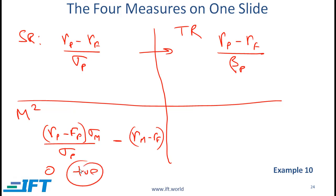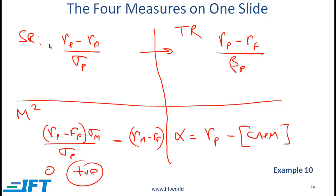Finally, Jensen's Alpha is the return on a portfolio minus the expected return based on CAPM. It makes sense to use the Sharpe ratio and M-squared when evaluating a manager whose portfolio is not well diversified. On the other hand, if the portfolio is supposed to be diversified, it makes more sense to use the Treynor ratio or Jensen's Alpha.